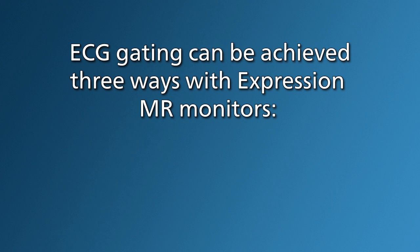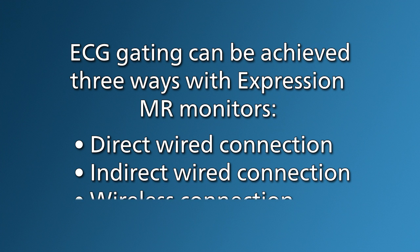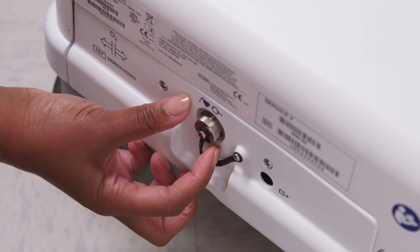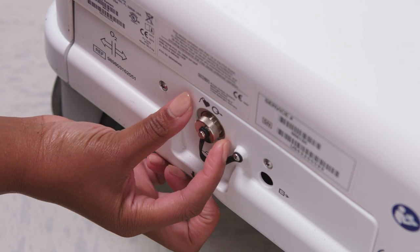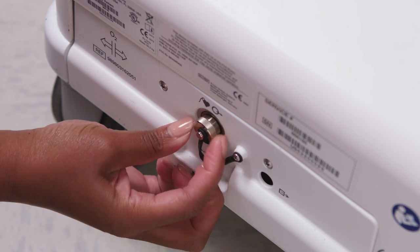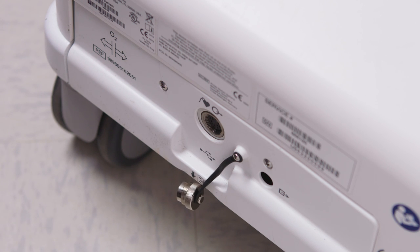ECG gating can be achieved three ways with Expression MR monitors – direct wired connection, indirect wired connection, or wireless connection. With a direct wired connection, the Expression MR monitor will connect directly to the external gating connection port on the MRI system via a gating cable.